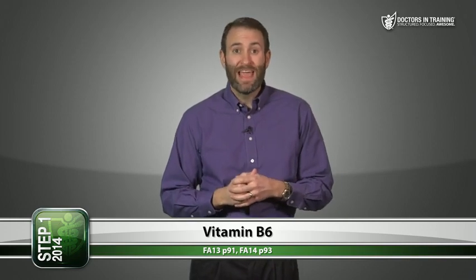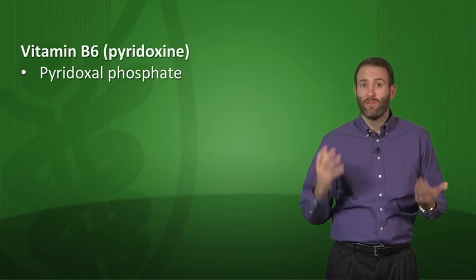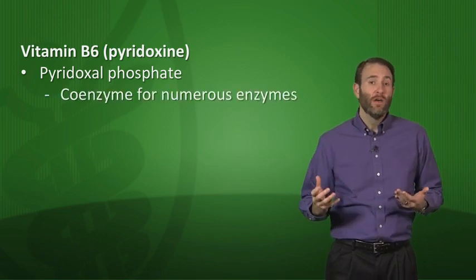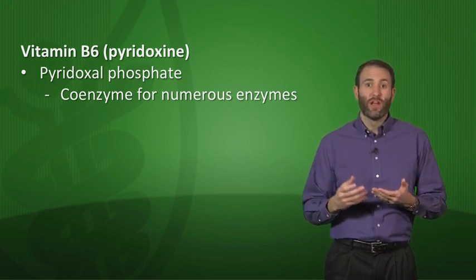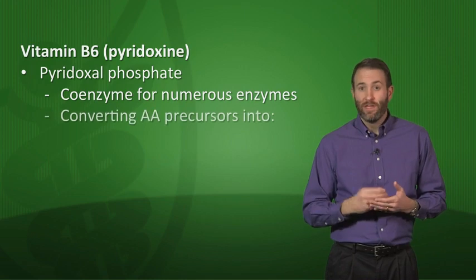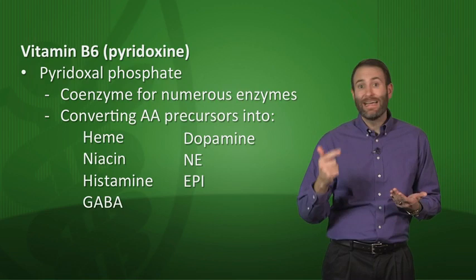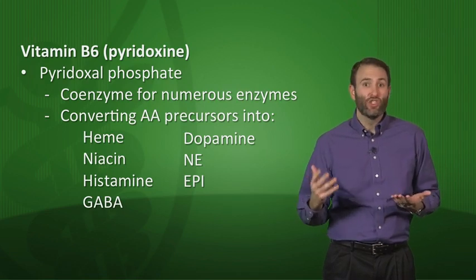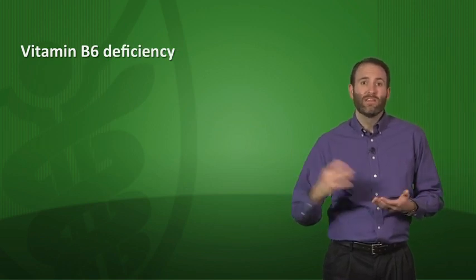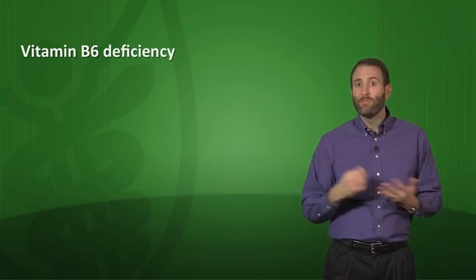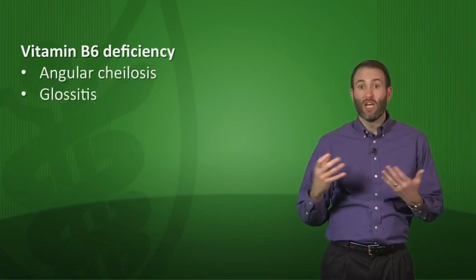Vitamin B6, also known as pyridoxine, has an active form called pyridoxal phosphate. It is a coenzyme for many enzymes of amino acid metabolism, including transaminations and deaminations. B6 is also important in converting amino acid precursors into heme, niacin, histamine, GABA, dopamine, norepinephrine, and epinephrine.